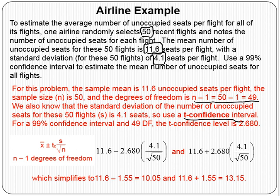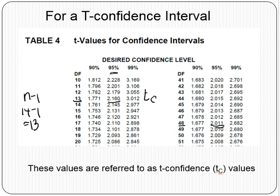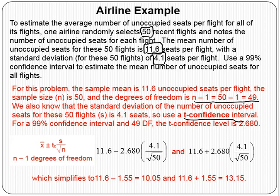For 99% confidence and degrees of freedom of 49, we go to the t-confidence table. At 49 degrees of freedom, 99% confident, we need 2.68 standard deviations up and down. So 2.68 standard deviations below and 2.68 standard deviations above — that is our t-confidence value of 2.68.